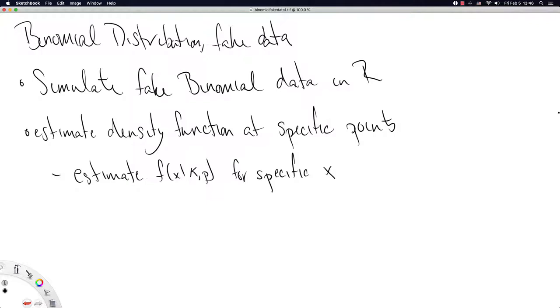That is, we're going to try to estimate the value represented by f at x given values for k and p for specific values of x. Hopefully that'll make a little bit more sense once we start seeing some data and looking at a plot. So all of this is going to take place in R. We'll jump over there now.